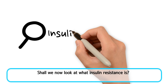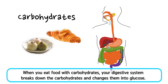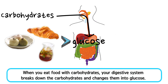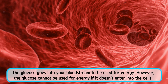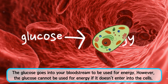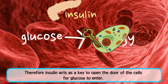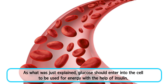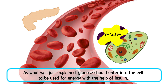So what is insulin resistance? When you eat food with carbohydrates, your digestive system breaks down the carbohydrates and changes them into glucose. The glucose goes into your bloodstream to be used for energy. However, glucose cannot be used for energy if it doesn't enter into the cells. Therefore, insulin acts as a key to open the door of the cells for glucose to enter. Glucose should enter into the cells to be used for energy with the help of insulin.